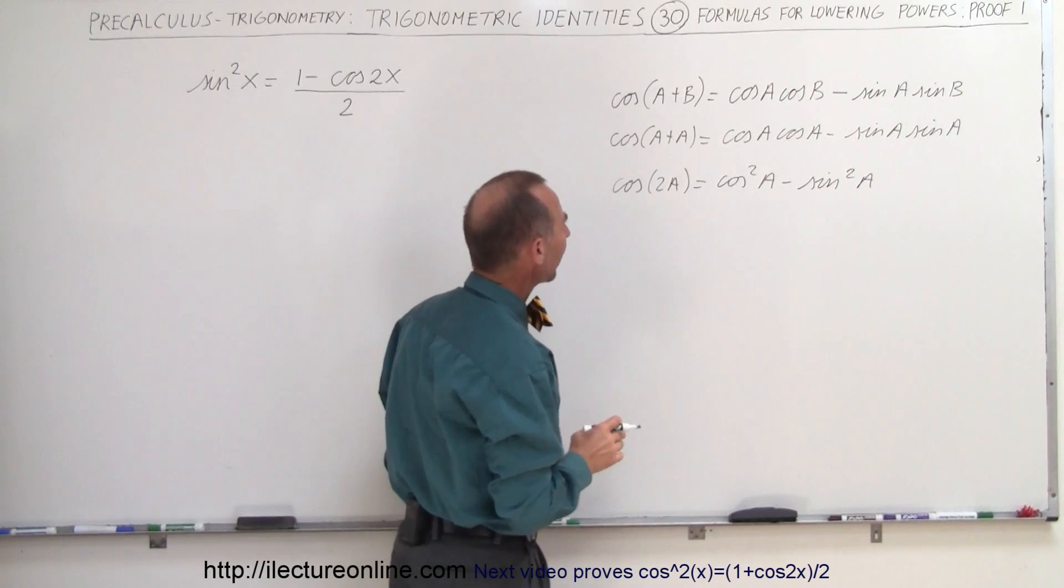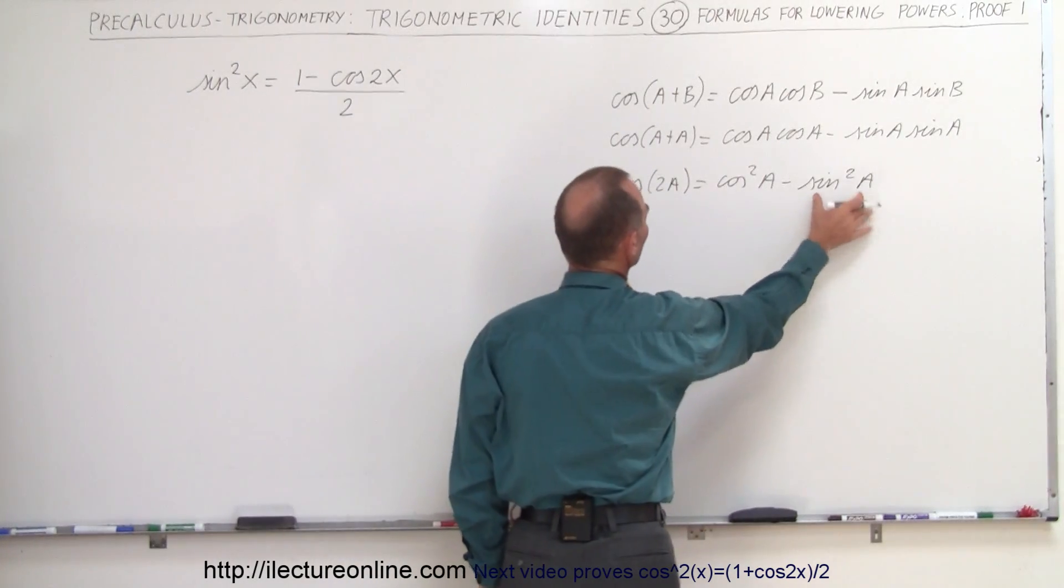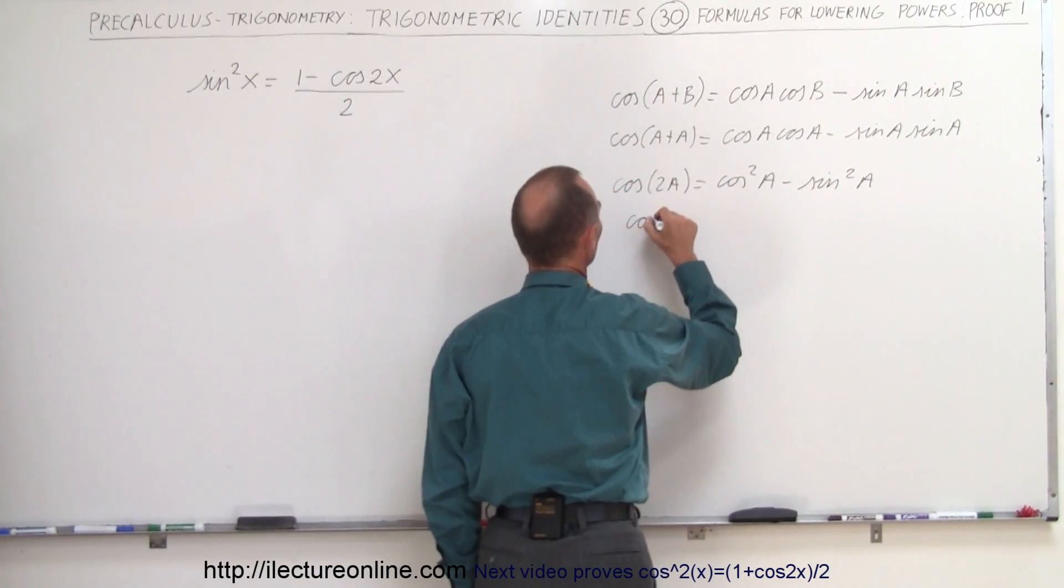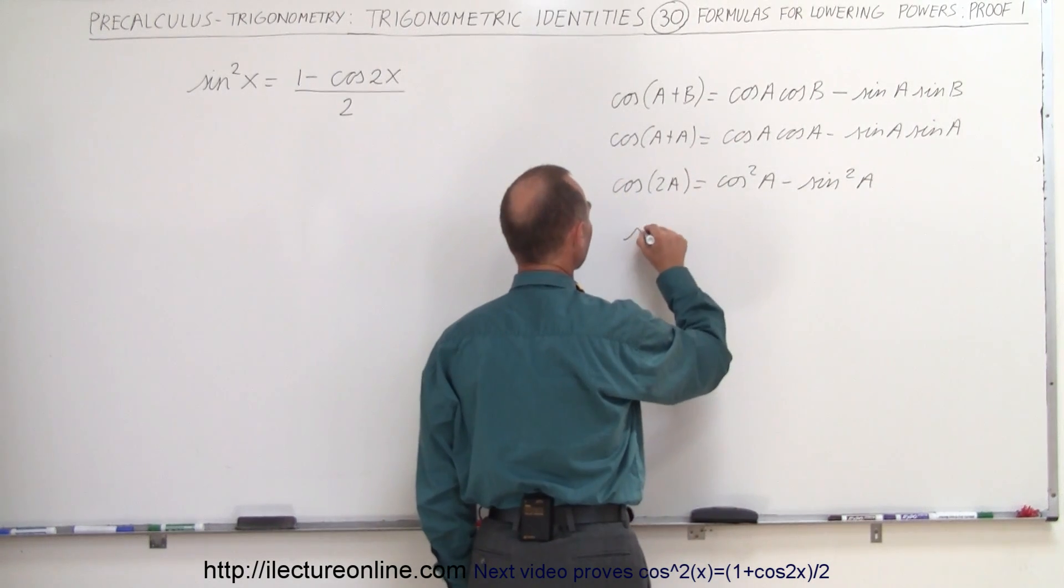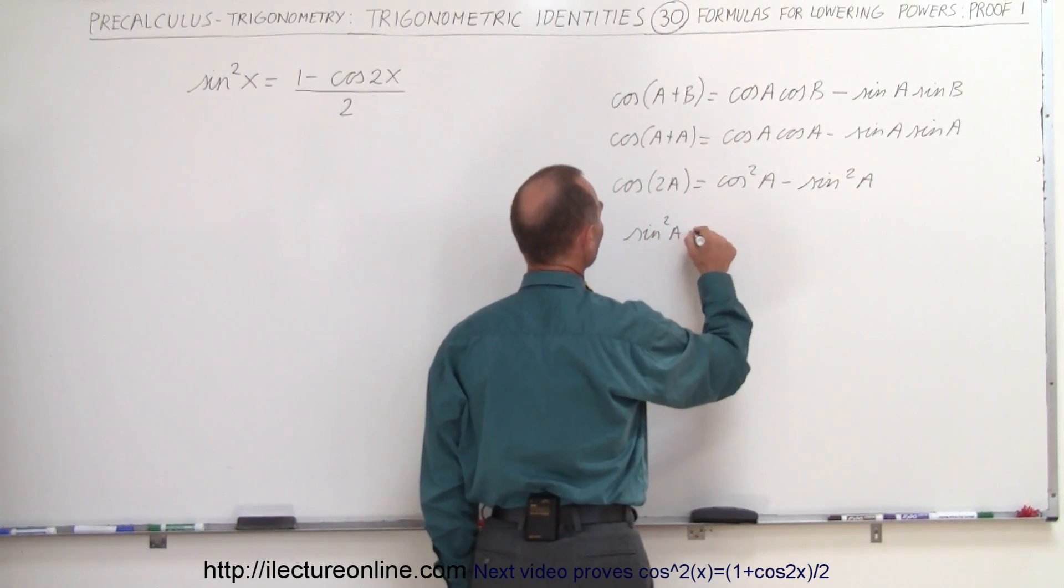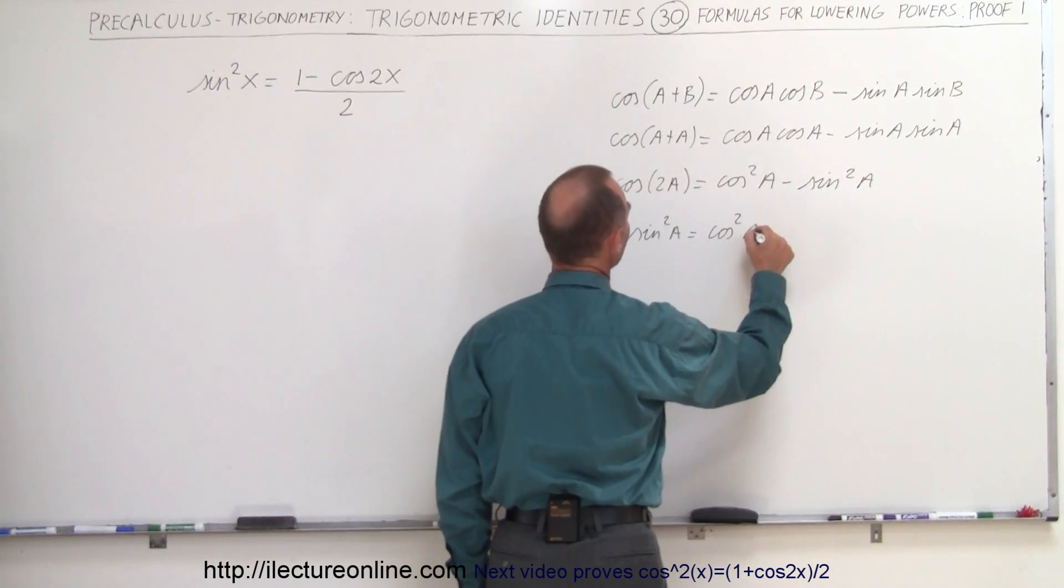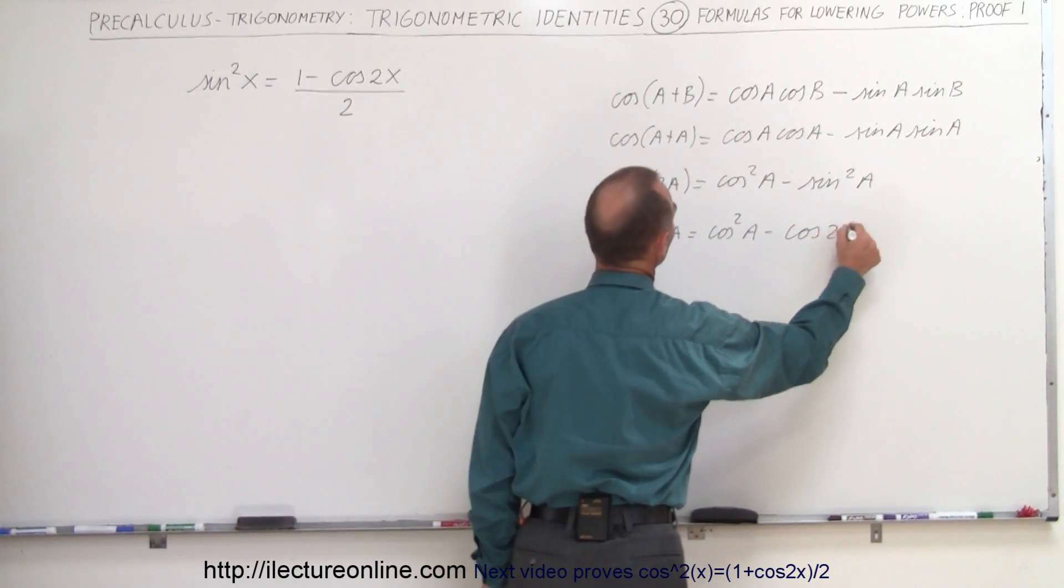Now, the next step is to go ahead and solve this for the sine squared of A. So we move that over here. So we have—oh, not the cosine—I want to move the sine over here. So the sine squared of A is equal to the cosine squared of A, minus the cosine of 2A.